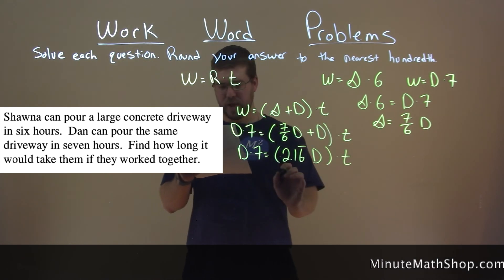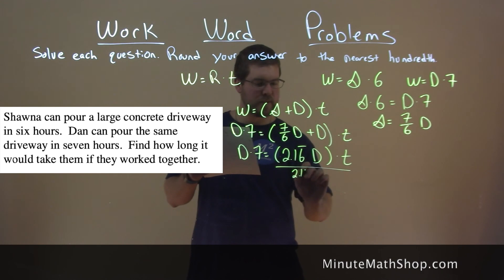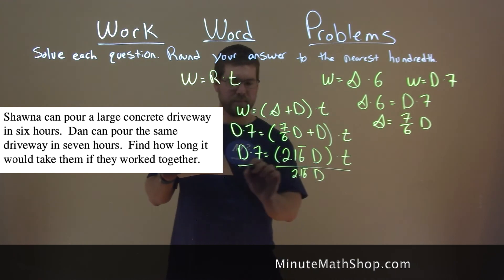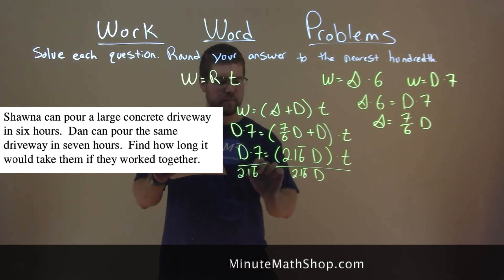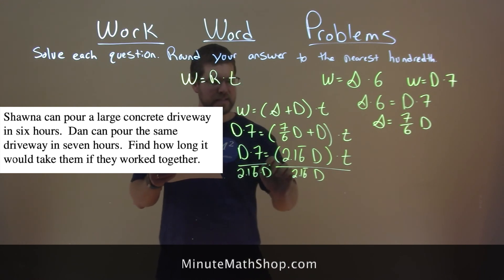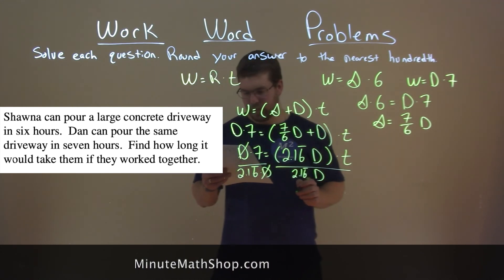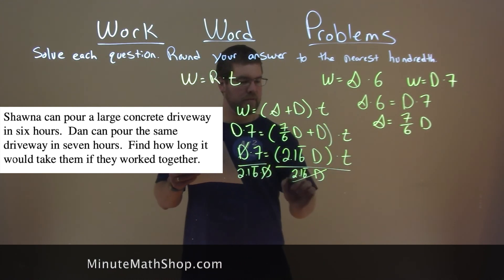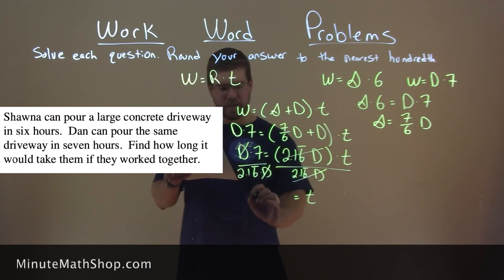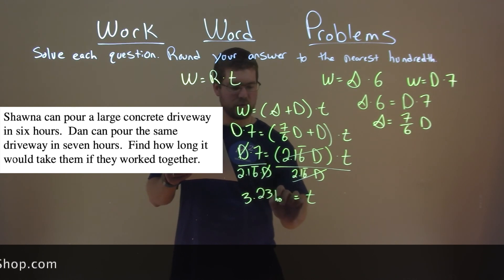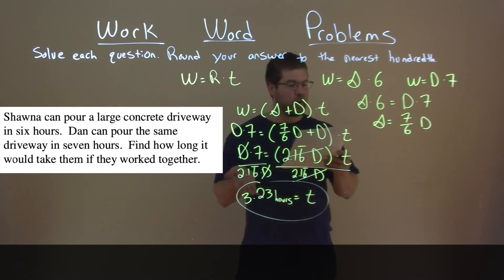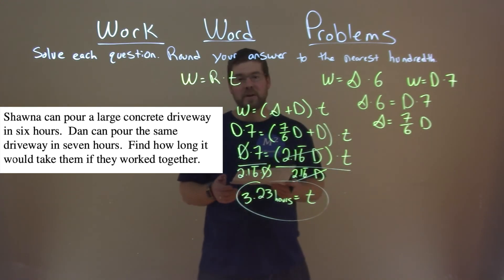We can divide both sides here by 2.16 repeating D, and the D's cancel. And we're left with T by itself, which is equal to 3.23 hours, and we now know exactly how long it would take if they worked together.